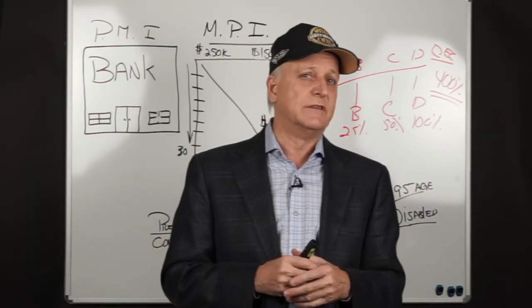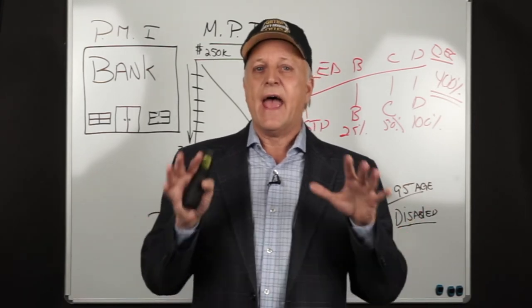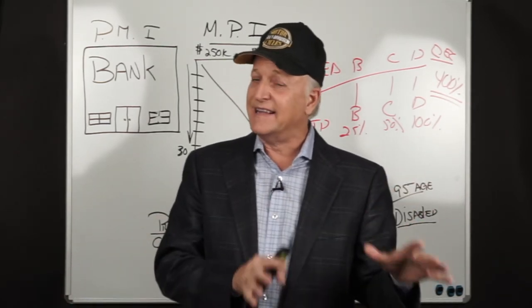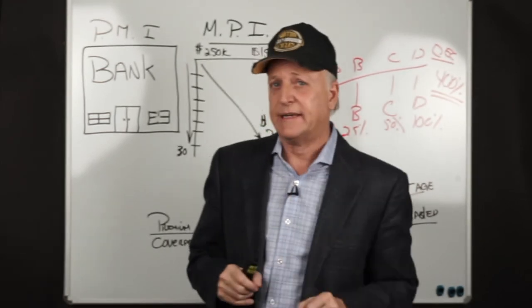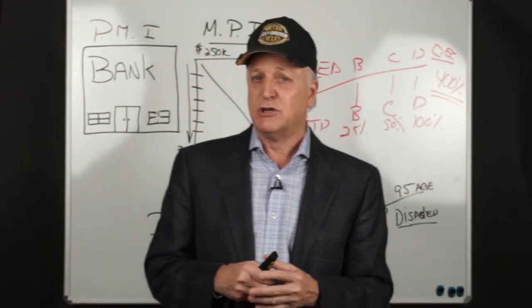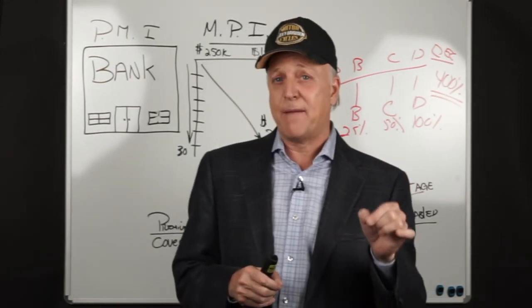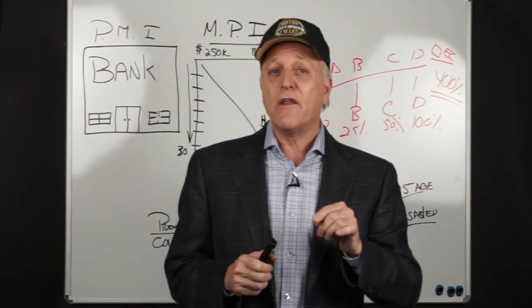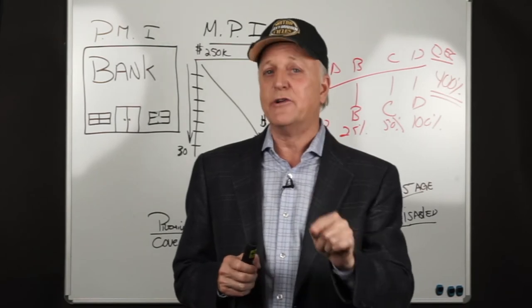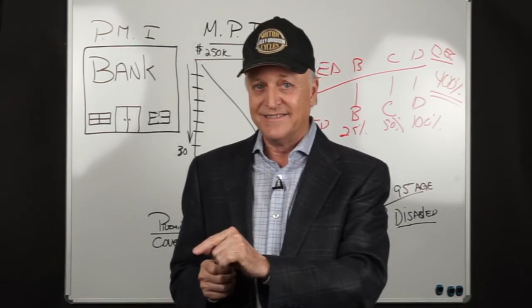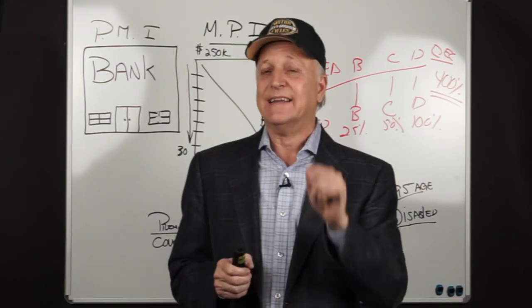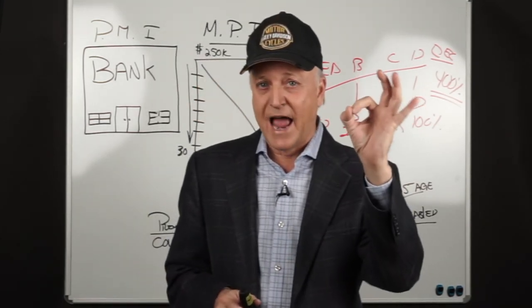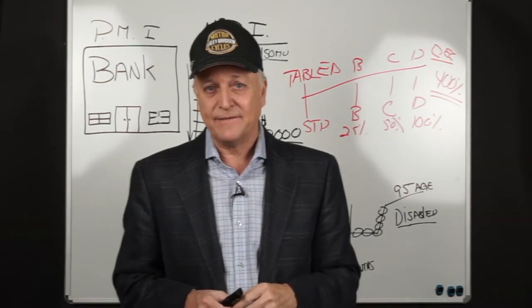In wrapping this up, the mortgage protection insurance concept is very easy to understand. Having mortgage protection protects the most valuable asset. Most people think it's the home — but it's not. It's your ability to earn income. The average mortgage in America is $213,000. The average American family is over $15,000 in credit card debt. The average student loan is over $32,000. All in all, the average American was over $250,000 in debt. The amount of life insurance owned is less than $100,000. 33% of American adults have zero life insurance.